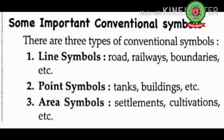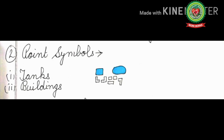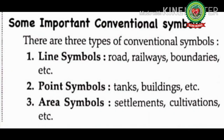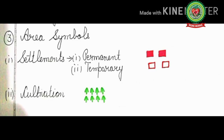Next we have point symbols, which refer to tanks, buildings, etc. For tanks, we can show them with two symbols — a square shape and a round shape — in blue color. For buildings, we use a specific kind of symbol in black color. Lastly, area symbols refer to settlements, cultivation, etc. Settlements means where people live, and are divided into two parts: permanent settlement — where people build their house to live permanently — and temporary settlement — where people live for few days, like tents and kachcha houses.